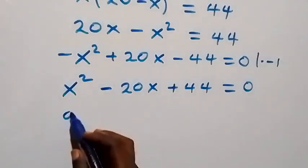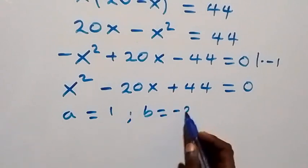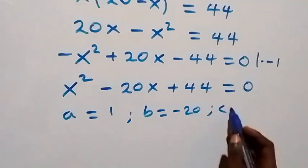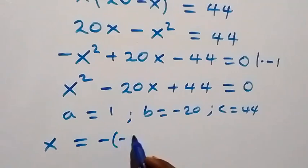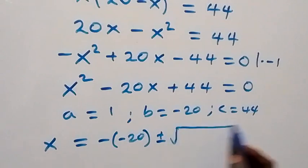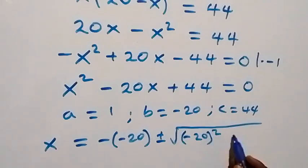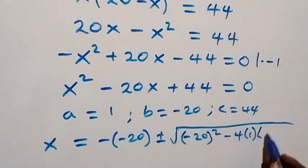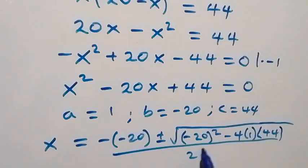We can solve this using the quadratic formula. Here we have a equals to 1, b equals to minus 20, and c equals to 44. From the formula, x equals to minus (minus 20) plus or minus square root of (minus 20) squared minus 4 times 1 times 44, all over 2 times 1.